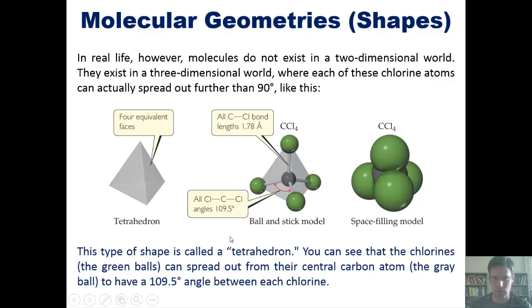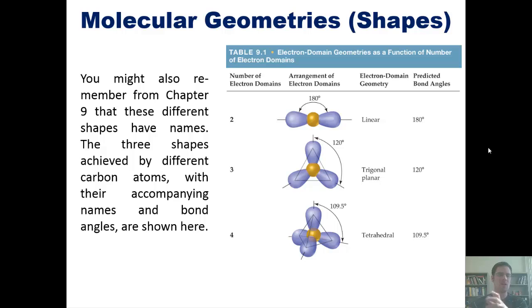You can see in a tetrahedron that chlorine atoms, these green spheres here, can spread out around the central carbon atom, this gray sphere, to have an angle of 109.5 degrees between each chlorine, which is larger than 90 degrees. Okay, good. So, you might also remember from Chapter 9 that these different shapes have names.